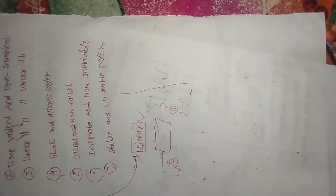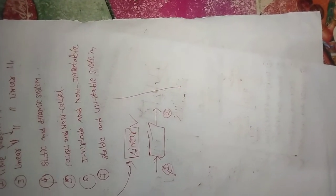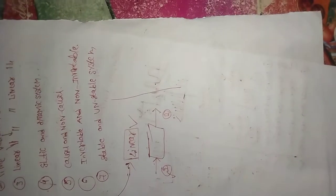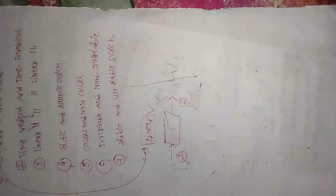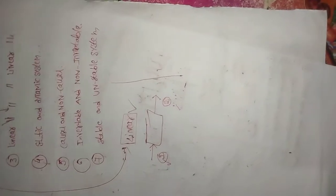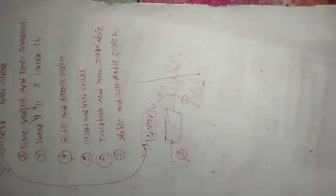For a linear system, the superposition theorem holds - it obeys the superposition theorem and output varies with the input. For a nonlinear system, the superposition theorem does not exist - it does not obey the superposition theorem and does not follow the input proportionally.